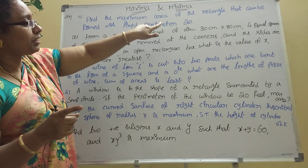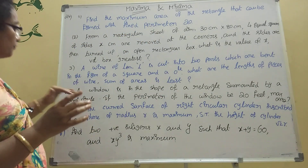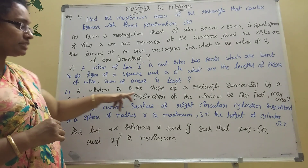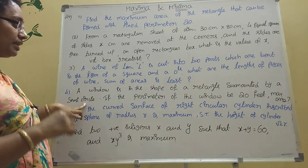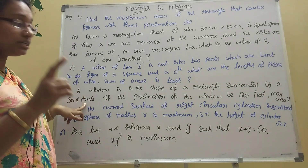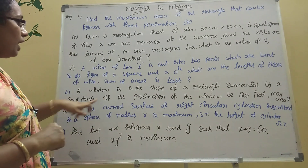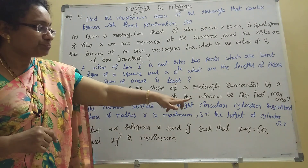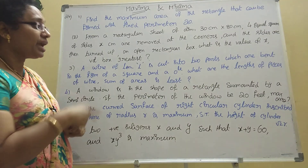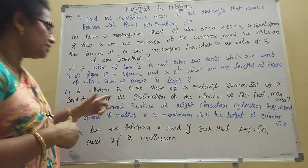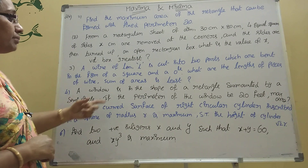Fourth problem: A window is in the shape of a rectangle surmounted by a semicircle. If the perimeter of the window is 20 feet, find the dimensions that give the maximum area. This is also a very important problem.